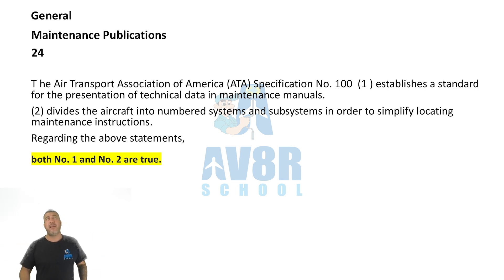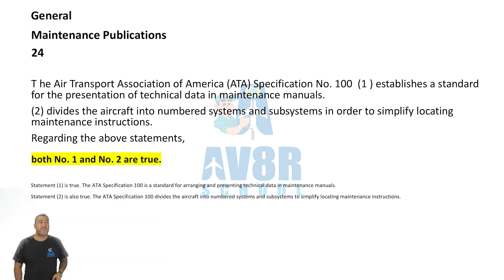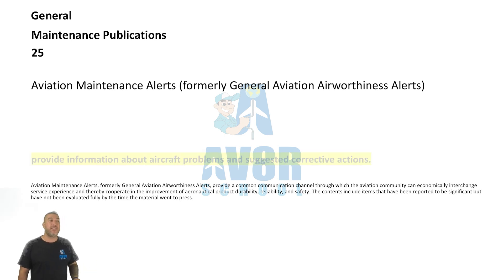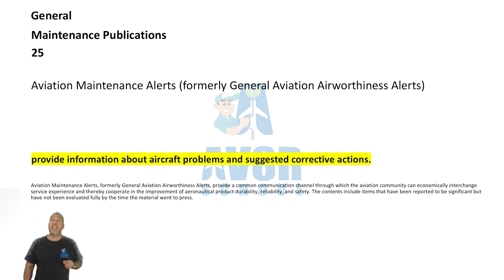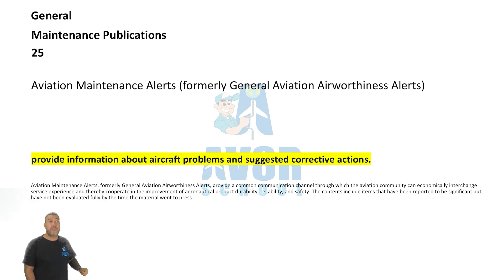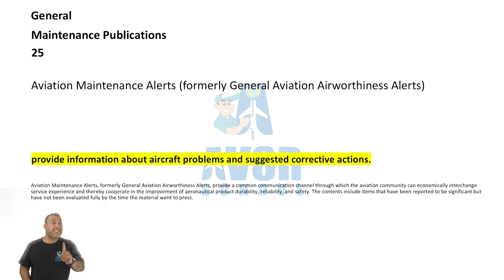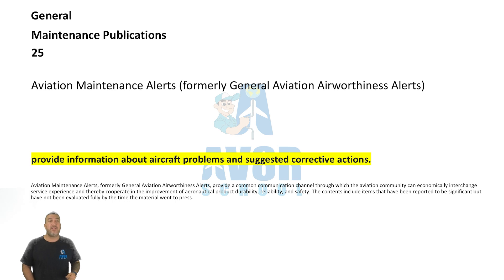Number 25: Aviation Maintenance Alerts — formerly known as General Aviation Airworthiness Alerts — provide information about aircraft problems and suggested corrective actions. They are not mandatory; they are only suggested corrective actions.